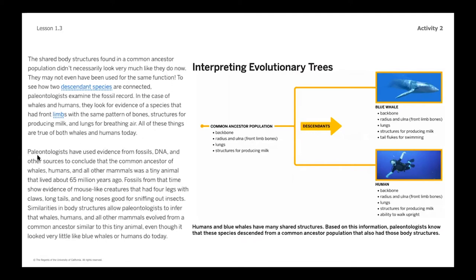Okay, let's pick back up right here, where it says, paleontologists have used evidence from fossils, DNA, and other sources to conclude that the common ancestor of whales, humans, and other mammals was a tiny animal that lived about 65 million years ago. There's a really cool picture of that in a second. Fossils from that time show evidence of mouse-like creatures that had four legs with claws, long tails, and long noses, good for sniffing out insects. Similarities in body structures allow paleontologists to infer that whales, humans, and all other mammals evolved from a common ancestor similar to this tiny animal, even though it looked very little like blue whales or humans do today.